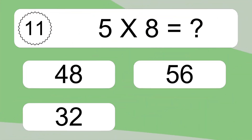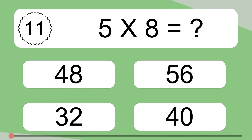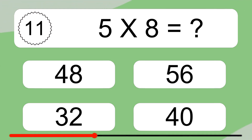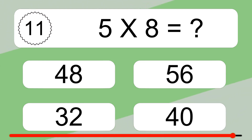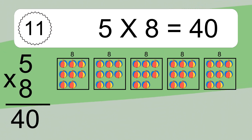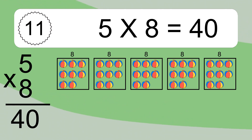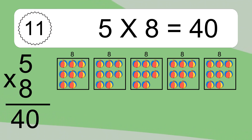5 times 8 equals what? 5 times 8 equals 40. We have 5 boxes, and each box has 8 colorful balls inside. If you count all the balls in all the boxes together, you will have 5 times 8 balls. This equals 40 balls.